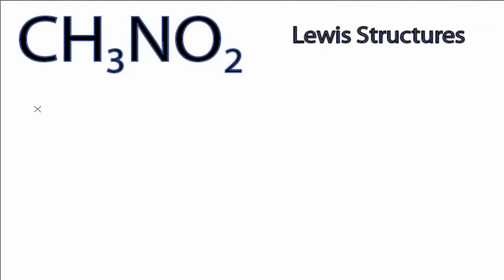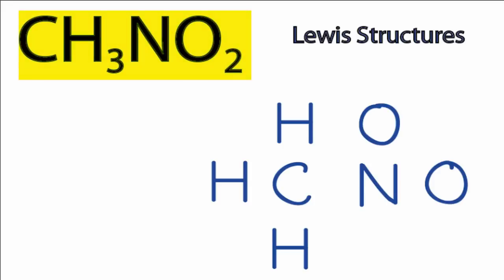There are two primary Lewis structures for CH3NO2. We'll do the first one by pretty much just drawing it out as we have in the structure above. So we have the carbon surrounded by three hydrogens, and then a nitrogen with two oxygens around it.